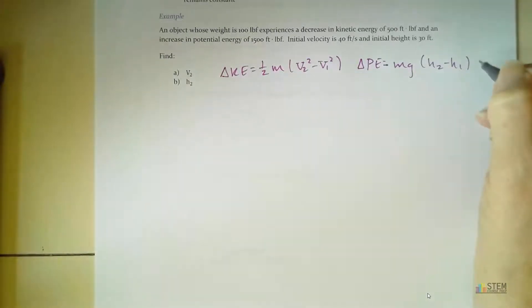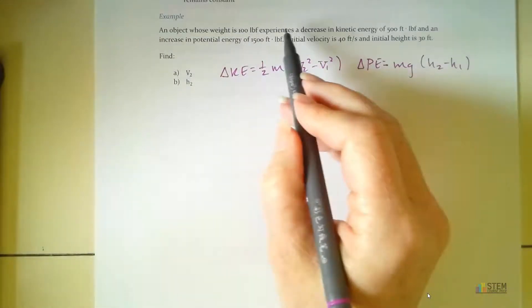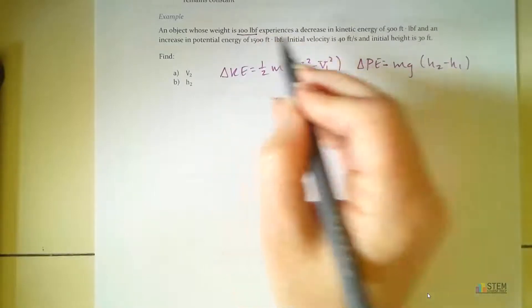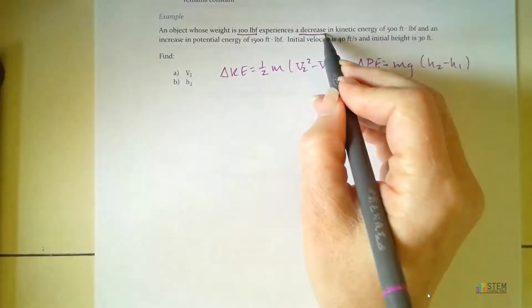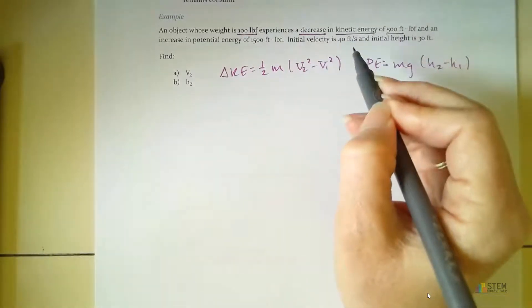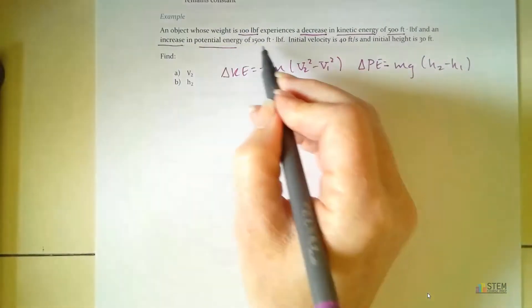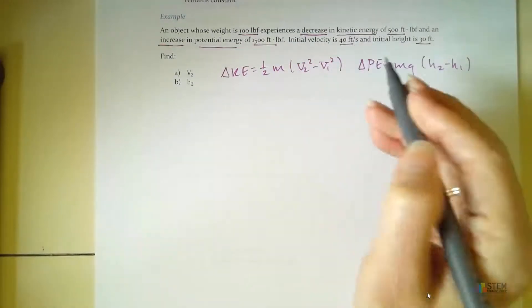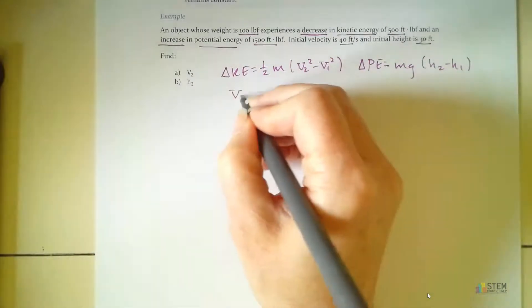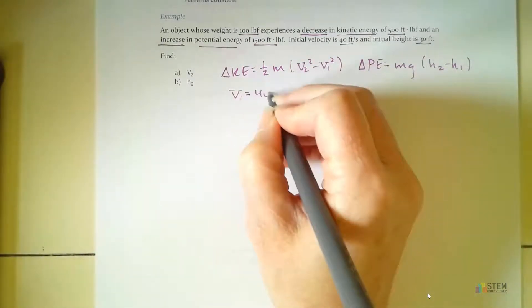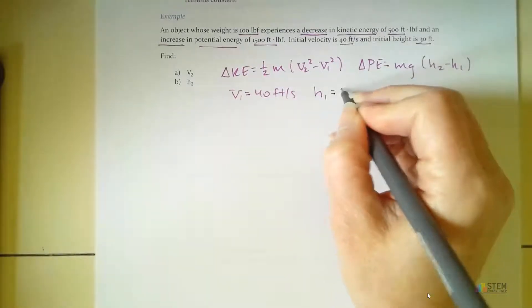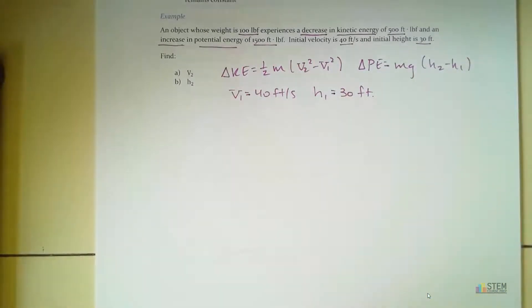So now we've got our equations. Now let's go through here, and let's make sure we've noticed all the details in the problem. So first we're given weight. We have a decrease in kinetic energy. It gives you the amount. We have an increase in potential energy. There's the amount. And then you've got your initial velocity and your initial height. So your initial velocity, which is v1, is going to be 40 feet per second. And then your initial height, which is h1, is given as 30 feet.